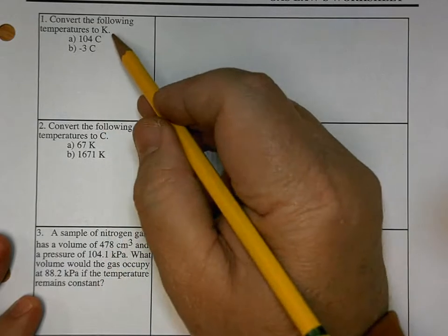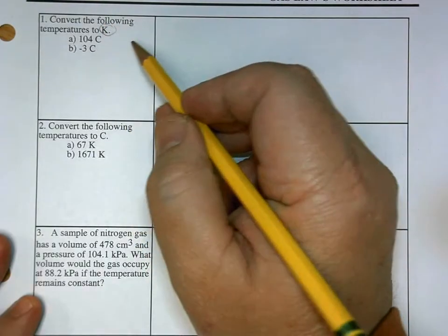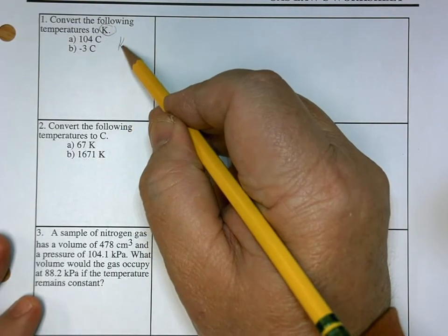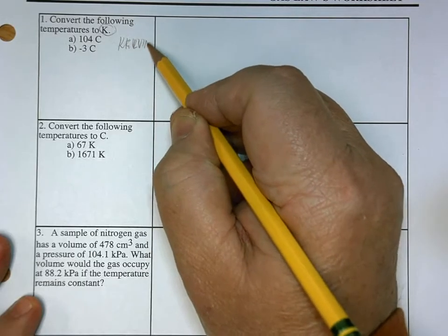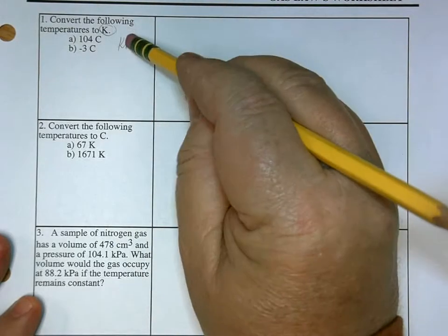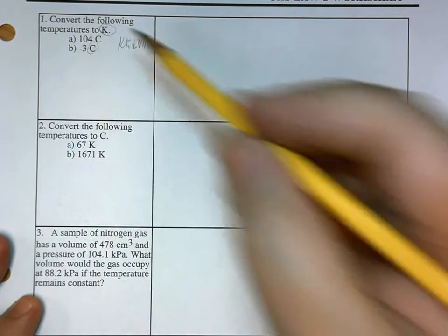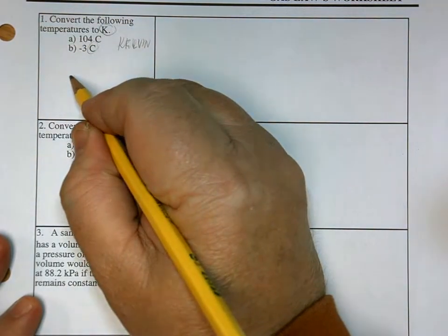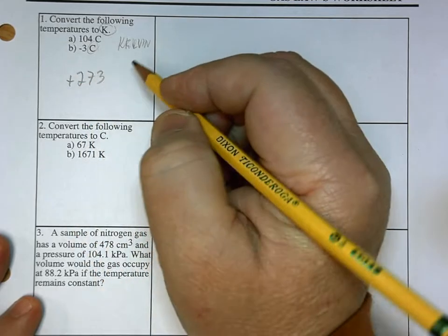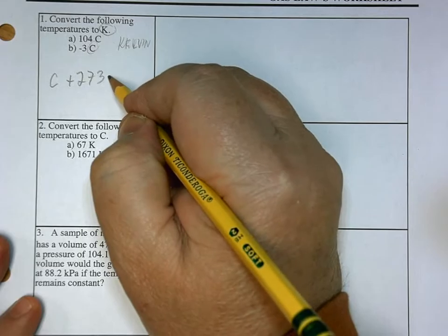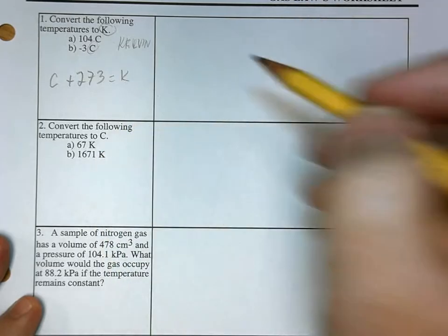Very important for all of these calculations we have to use the Kelvin, that's spelled K-E-L-V-I-N. We can't use the centigrade, so we have to convert it. What do we do? We add 273. C plus 273 is equal to K, that's our formula.